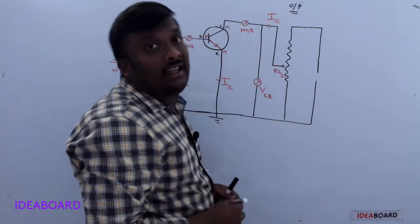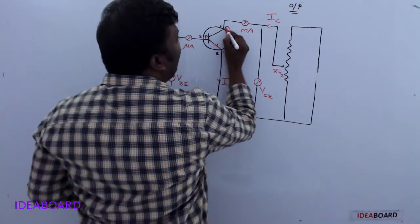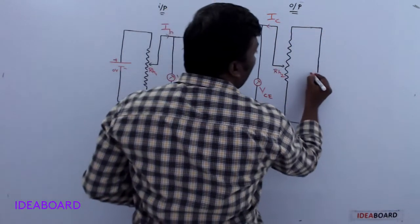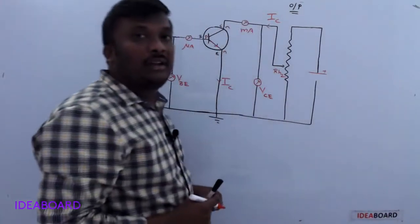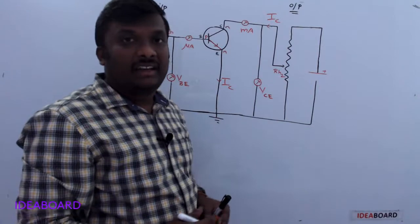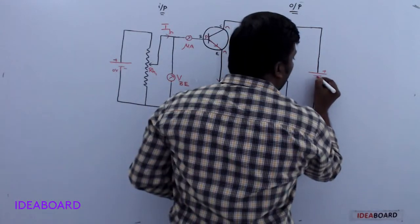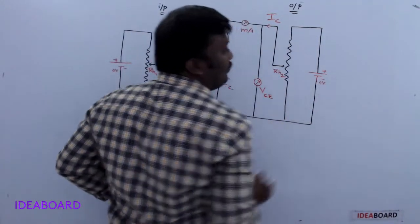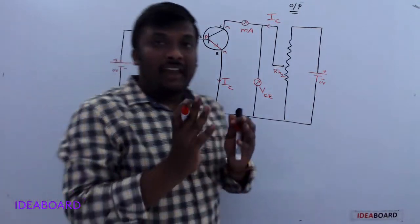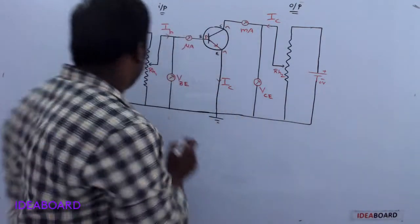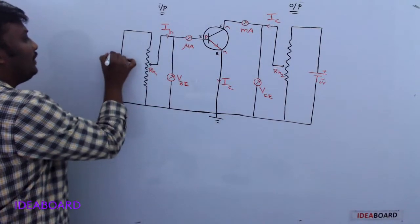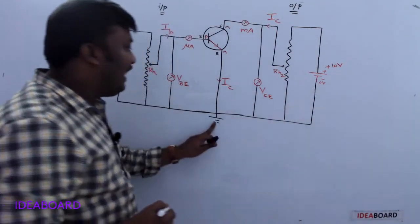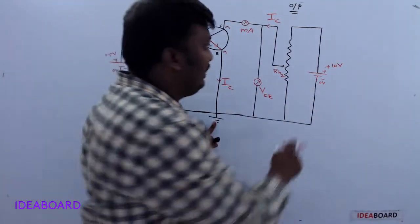The collector junction is always in reverse bias. In reverse bias, the N-type material is connected to the positive terminal of the battery. The negative terminal of the battery is connected to earth, making that potential 0 volts. So if you apply 5 or 10 volts, it becomes +5 or +10 volts directly.